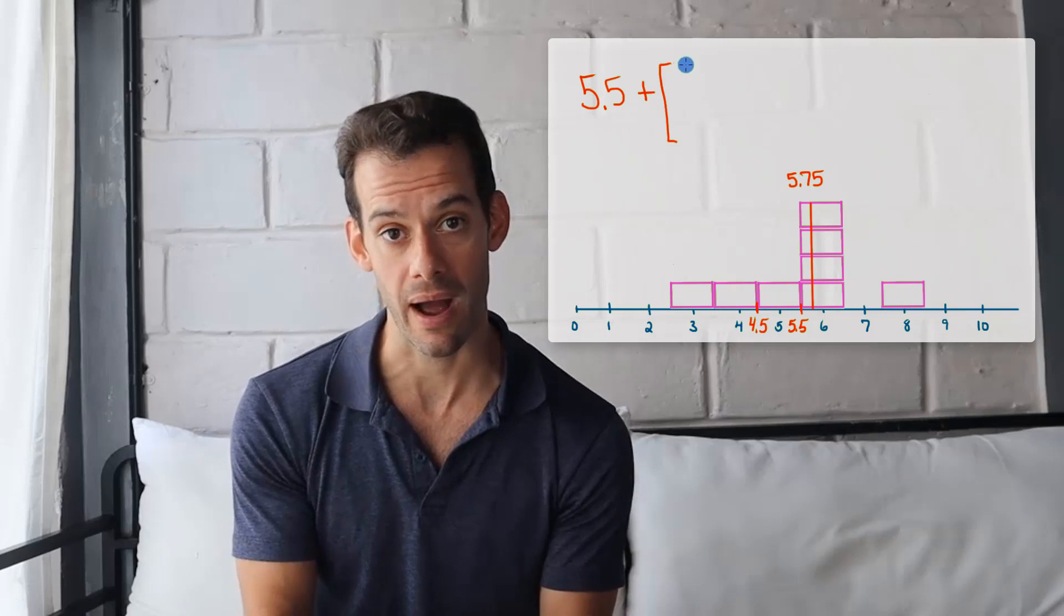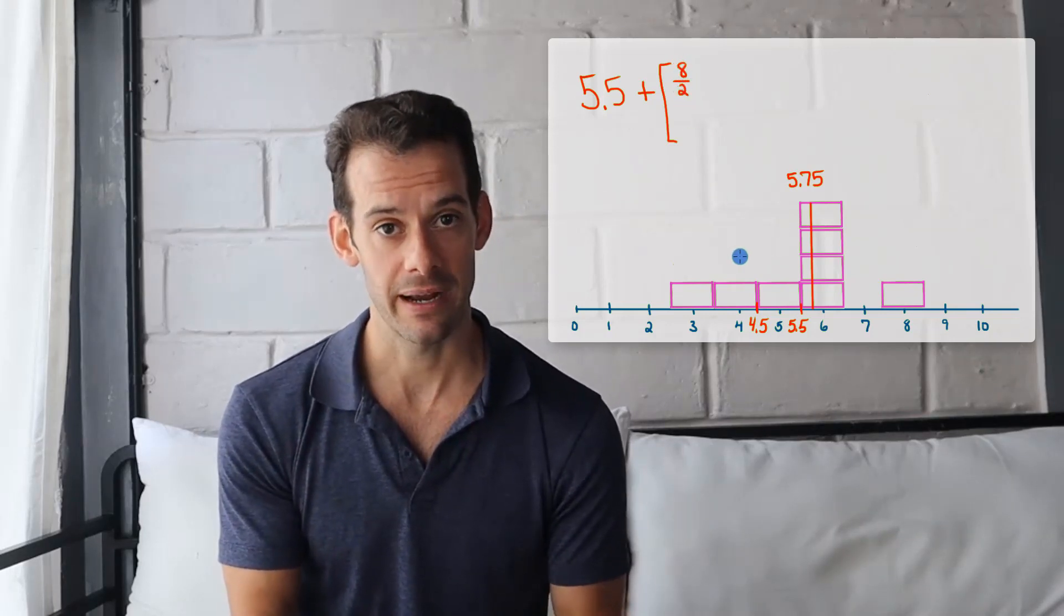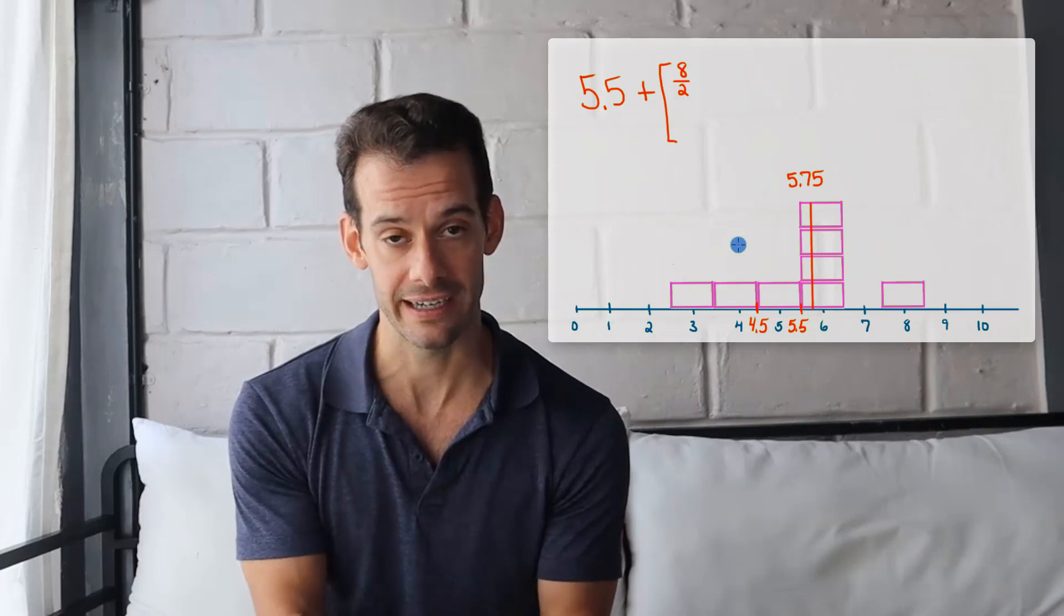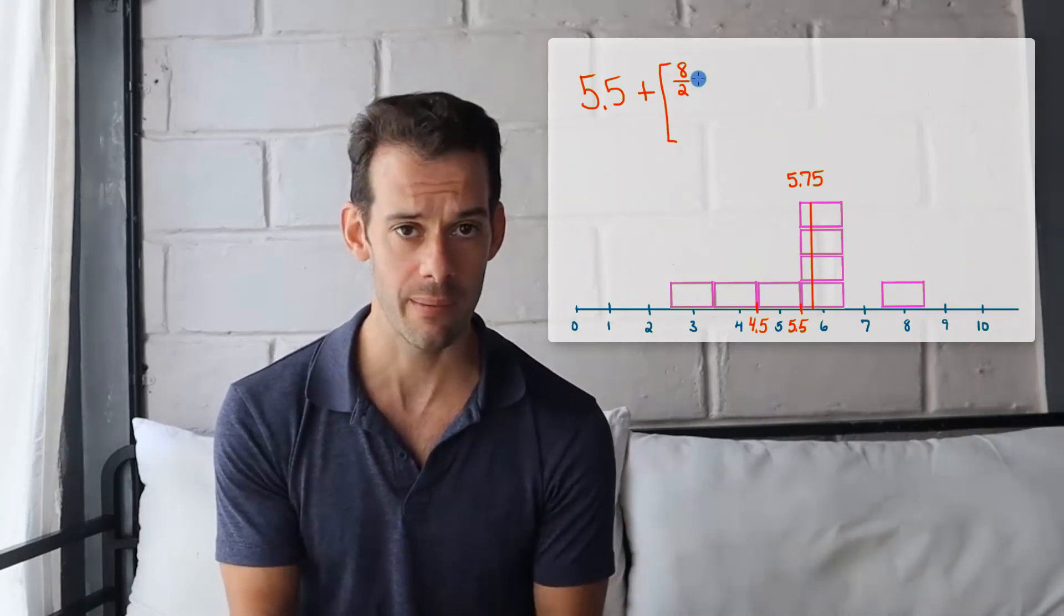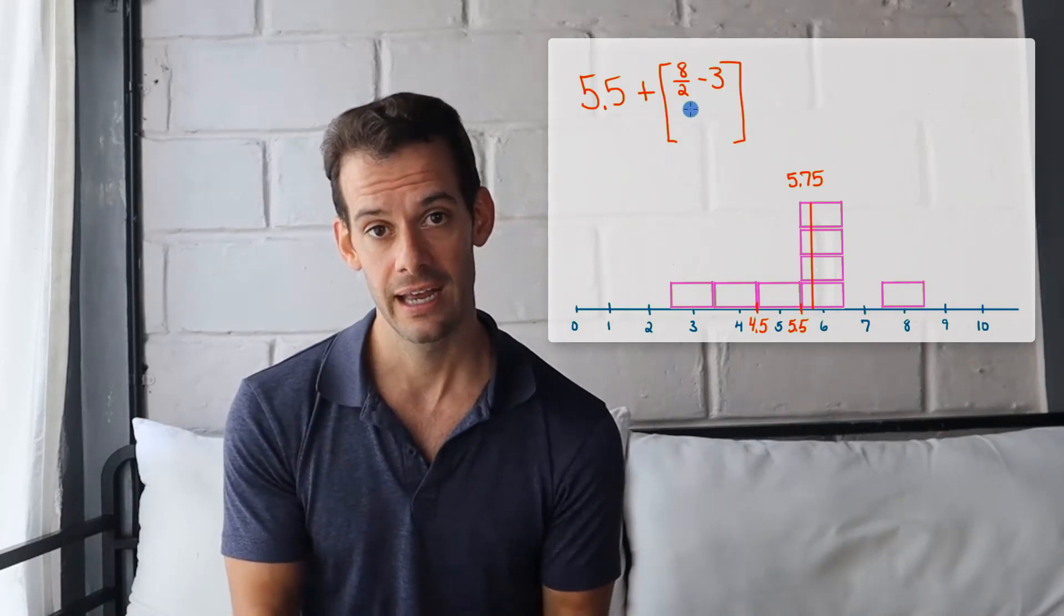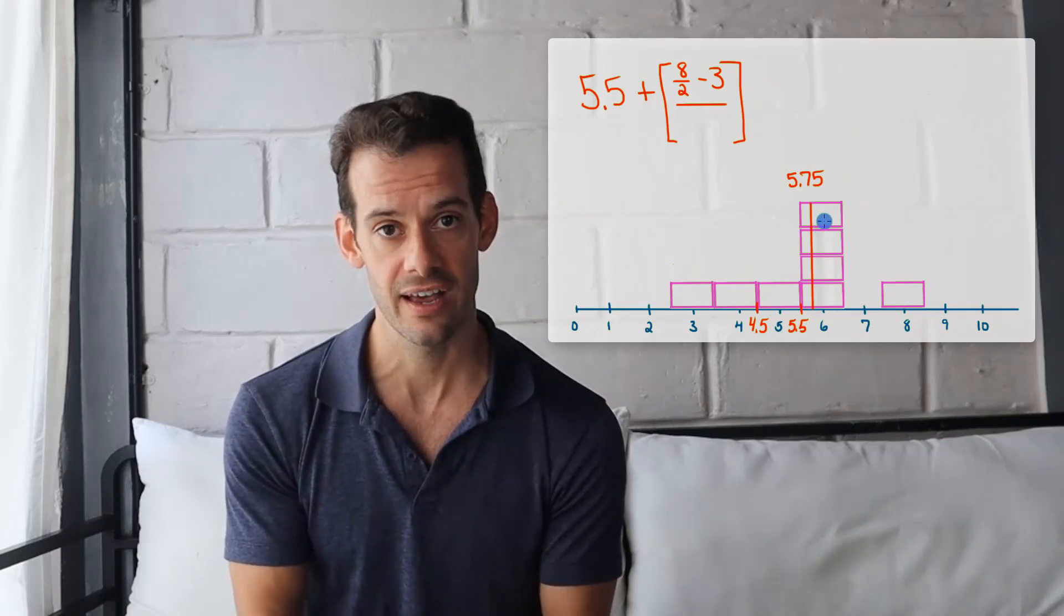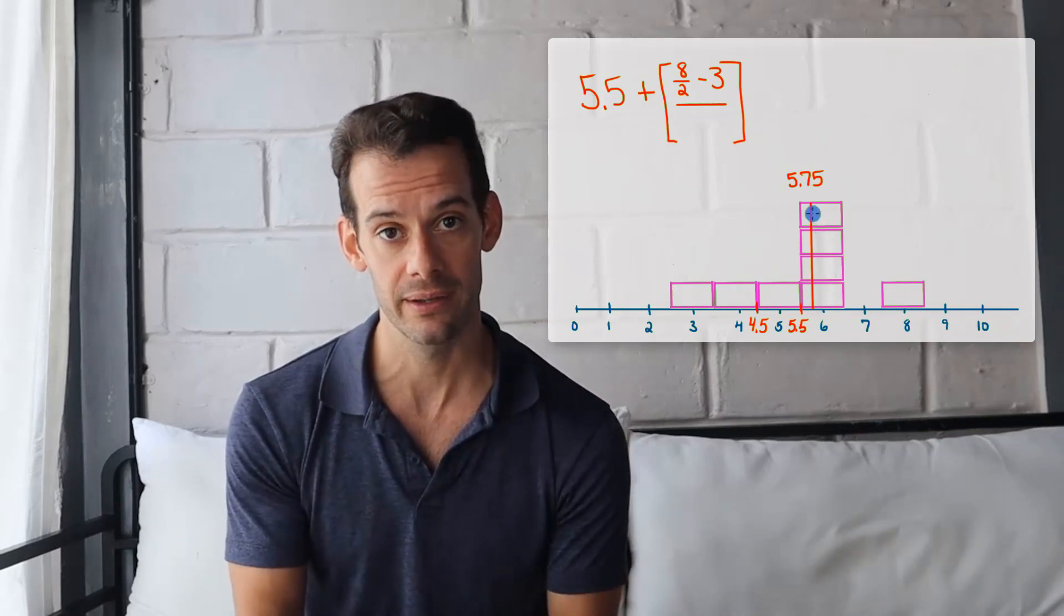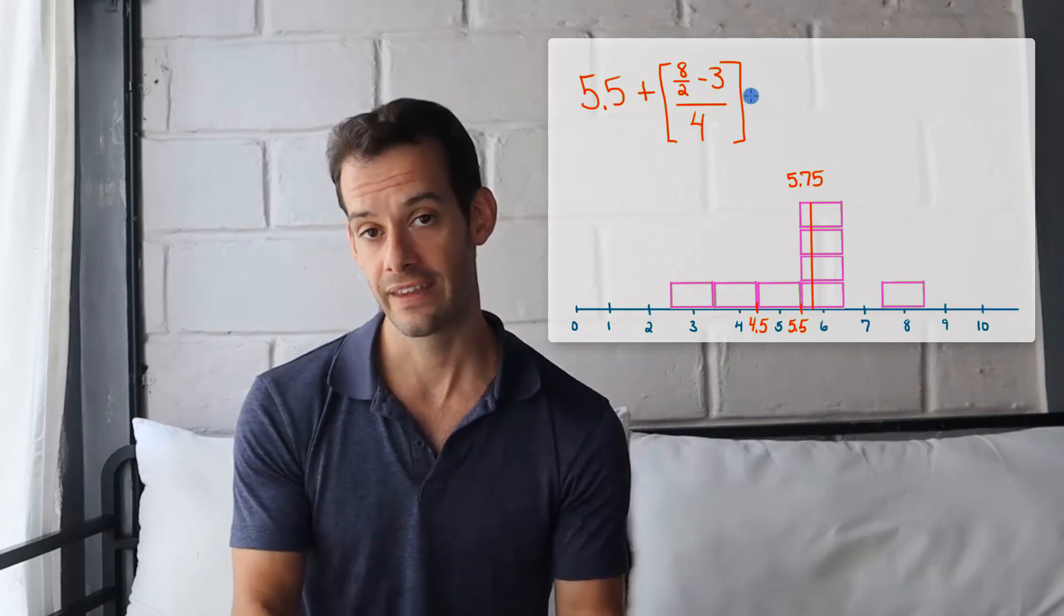So next we found the fractional portion. We said okay, we're trying to get to 4 boxes. So that's our n over 2. That's 8 divided by 2. That's the midpoint of our data we're trying to get to. But we already had 3 boxes to the left. So we don't need to worry about those. We can take those away. We're really only looking for one more box. And then in order to get that we need to know well how many scores were stacked up at 6? How many boxes are we dividing up? And so we're going to divide by 4. And then this gives us 1 fourth.